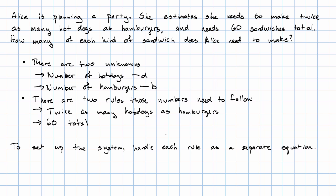The first rule says there are twice as many hot dogs as hamburgers. So that means the number of hot dogs is two times the number of hamburgers. That gives us the equation: D equals 2B.